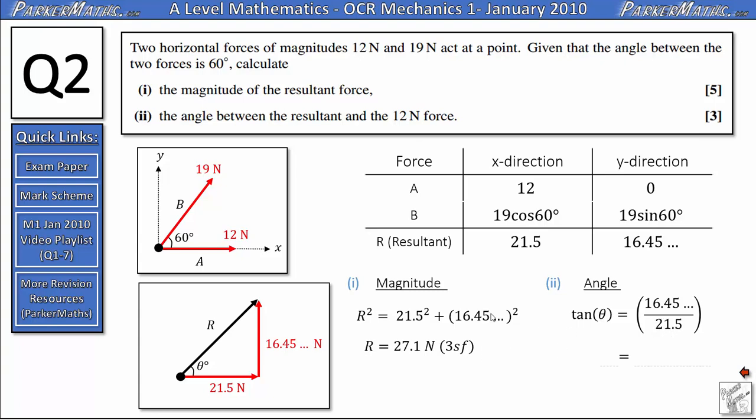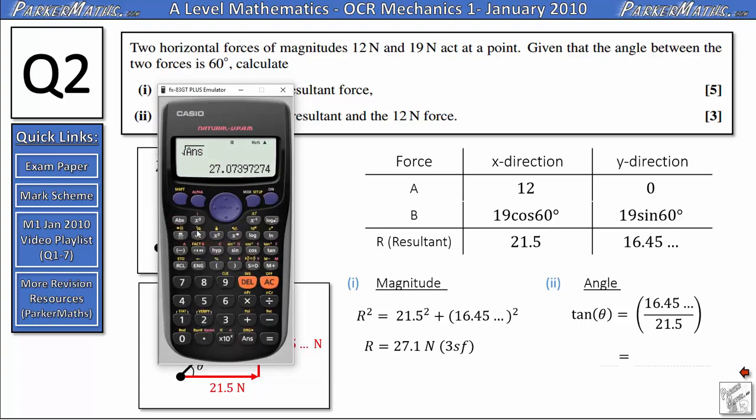Now you may have been thinking earlier, why didn't I use the answer button here instead of storing the value for this 16.45 and the answer is that I knew I was going to need to use it again over here. And the answer in my calculator now is stored as 27.1, but because I stored it as A, it will still be in my calculator.